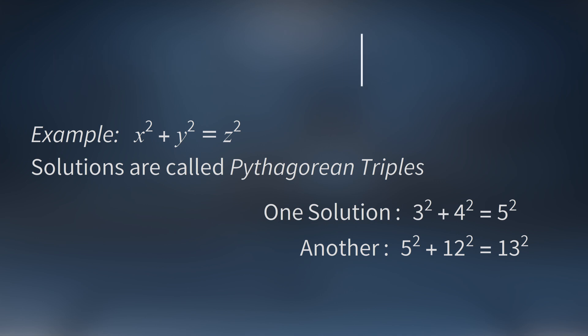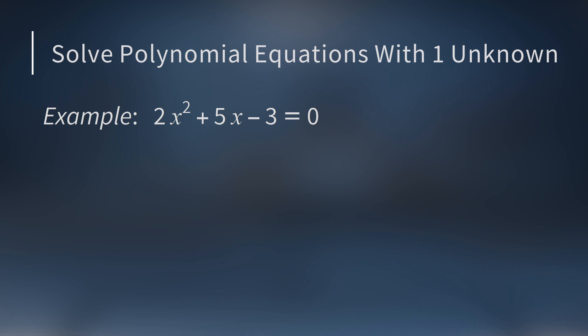But today we are going to focus on polynomial equations with a single unknown. For example, 2x squared plus 5x minus 3 equals 0, or 3 times y to the 5th plus 33y to the 4th plus y cubed plus 11y squared equals 2y plus 22.